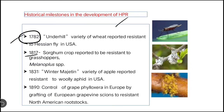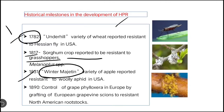In the year 1817, sorghum crop was reported to be resistant against the grasshopper. Next, in the year 1831, the Winter Magettine variety of apple was reported to show resistance against the woolly aphid — scientific name Eriosoma lanigerum. Remember these two with their respective years.